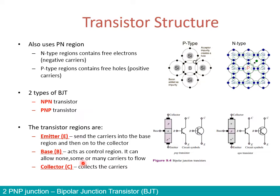Whereas for emitter and collector: there's P, P+, N, N+. The P+ or N+ is what we call the emitter — it is the component that sends the carriers. Whereas the collector is basically the region that collects the carriers. We'll go into more details in the next slide.